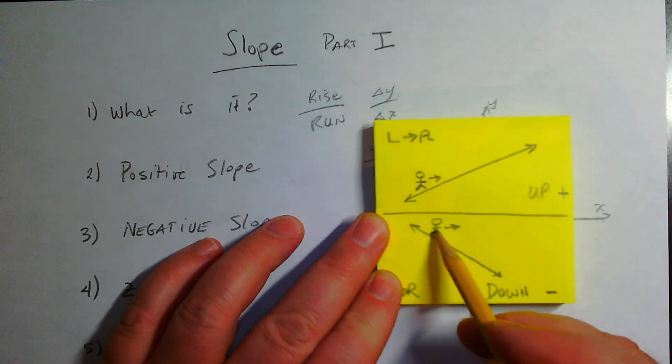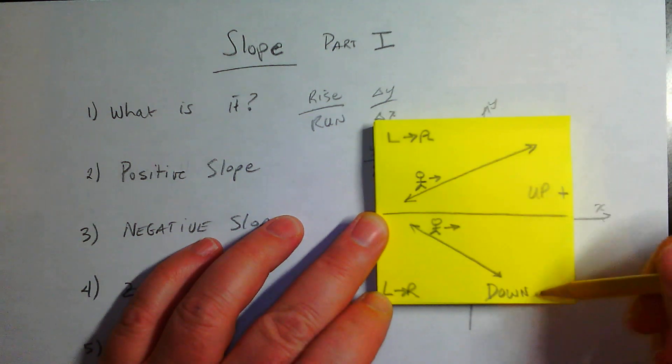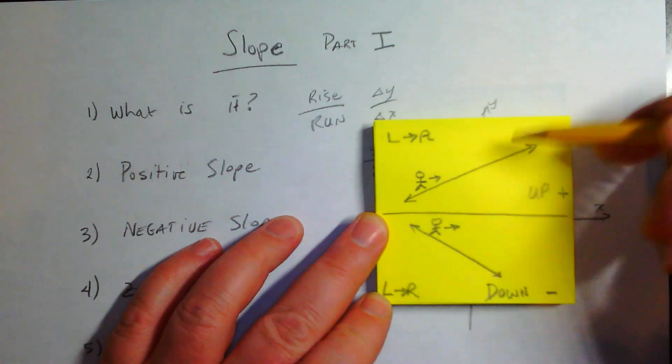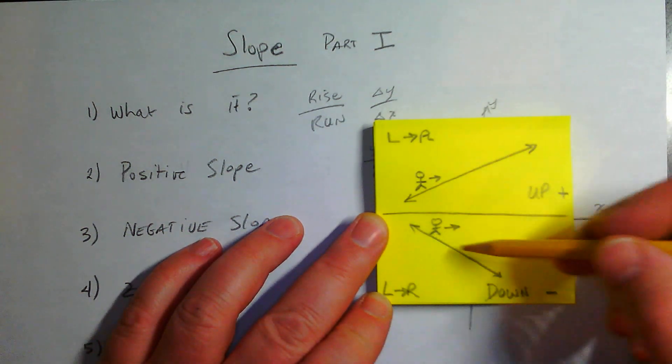But if you're standing on the left and start walking to the right and you go down, that would be a negative slope. The key idea is you read a graph from left to right. If it goes up, it's positive. If it goes down, the slope is negative.